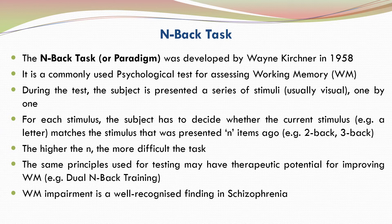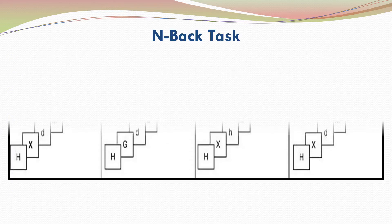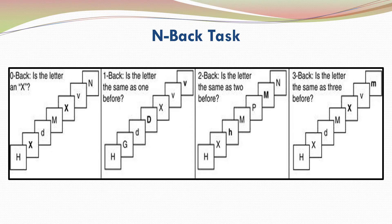Working memory impairment is a well-recognized finding in schizophrenia. This is a pictorial representation of the N-back task. There are four types shown: 0-back, 1-back, 2-back and 3-back. 0-back is the simplest while 3-back is the toughest out of these four. Those who are interested can pause and note down the details.